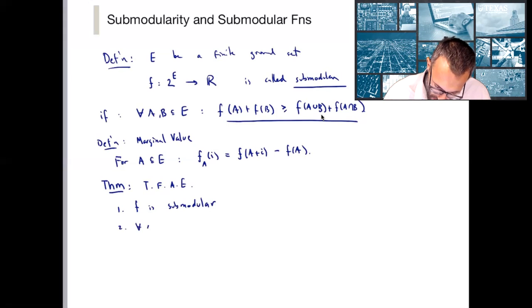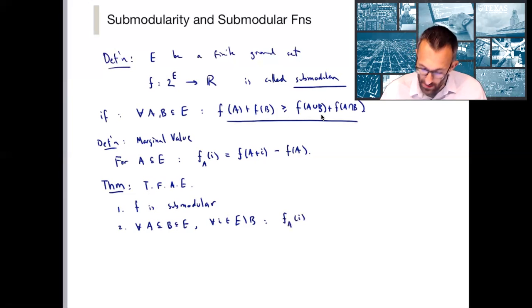Two, for any two subsets that are nested A and B of the ground set, and for any element that's not in either A or B, the marginal value of i with respect to the set A is greater than or equal to the marginal value of i with respect to any superset B of A.